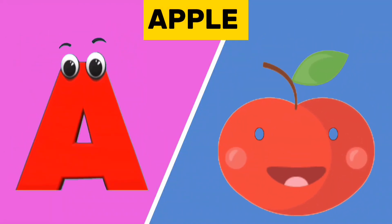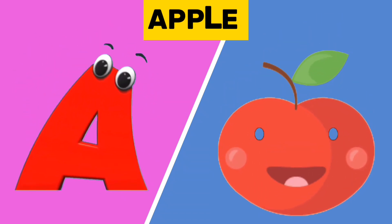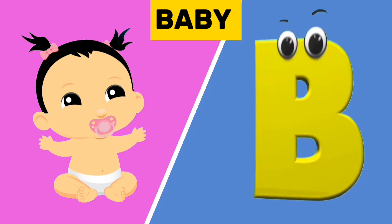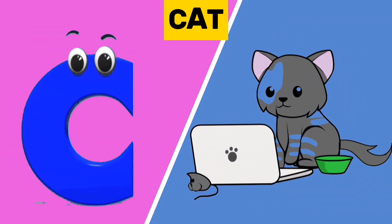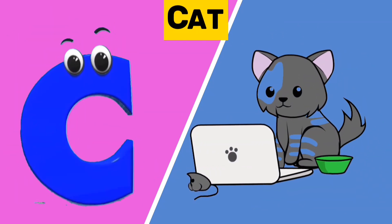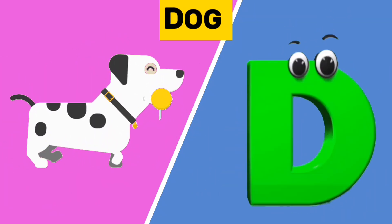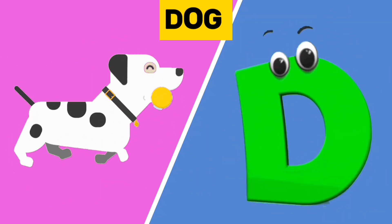A is for apple. A, a, apple. B is for baby. B, b, baby. C is for cat. C, c, cat. D is for dog. D, d, dog.